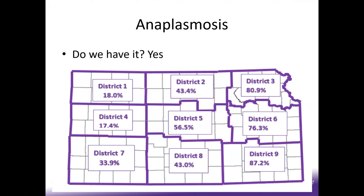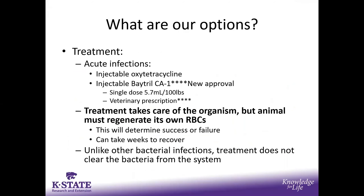Where is anaplasmosis? Do we have it in Kansas? Absolutely — it's been documented in every region of Kansas, even in far northwest and southwest. A study done a couple of years ago looked at prevalence within herds. The percentages represent herds affected, not individual animals. In east central and southeast Kansas, a pretty large majority of herds have at least one animal that would be a chronic carrier or infected with anaplasmosis. Yes, it's in the area and being transmitted.